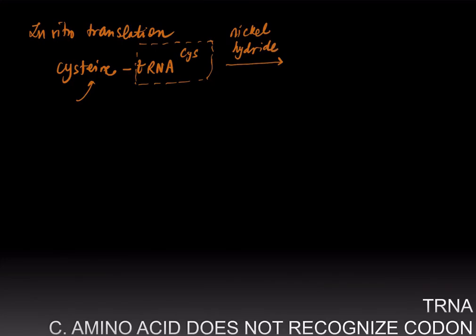And what you do is you treat these charged tRNAs with nickel hydride. And what nickel hydride does is it converts the amino acid cysteine to alanine. So whereas this tRNA was charged with cysteine before, it becomes charged with alanine. All the cysteines that were attached to the tRNA have been converted to alanine. However, we have not changed the anticodon on this tRNA.